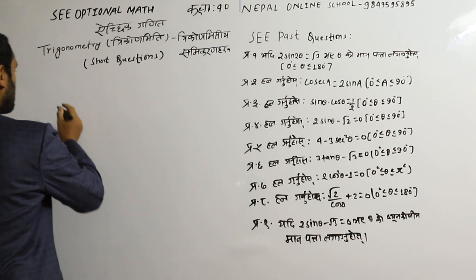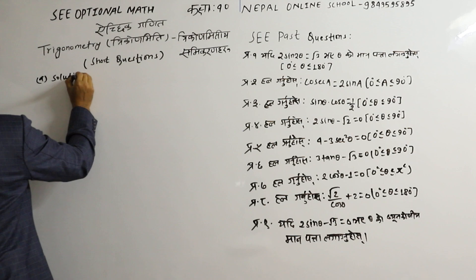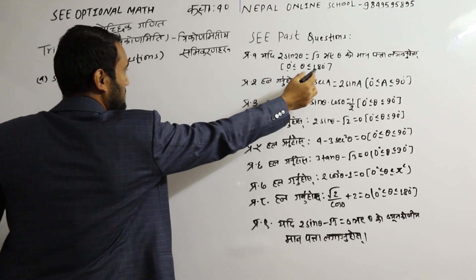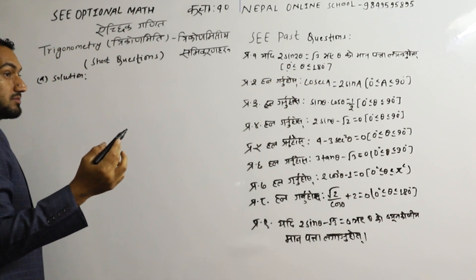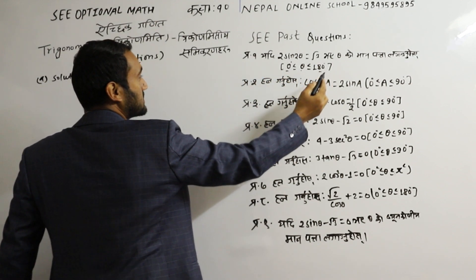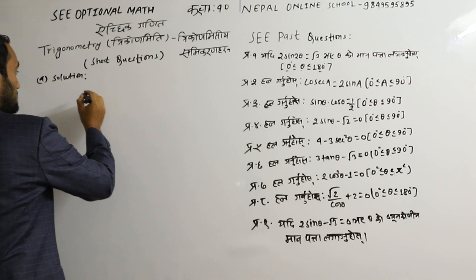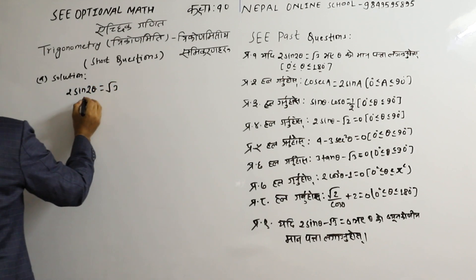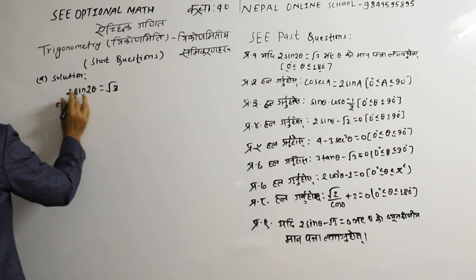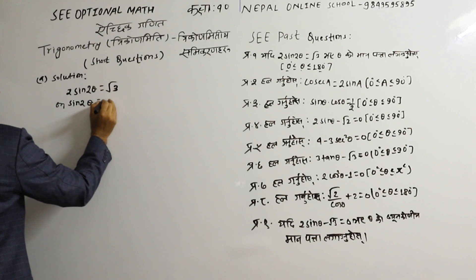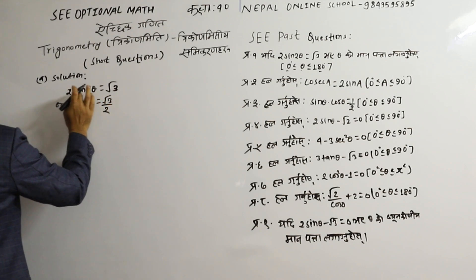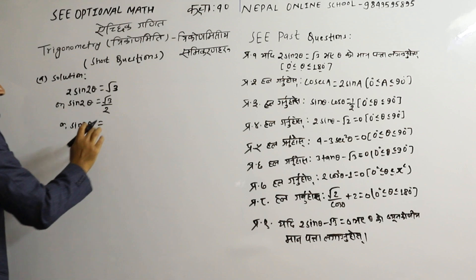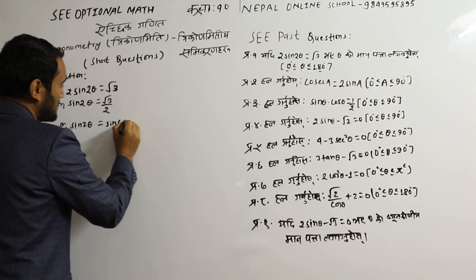First question: if 2sin2θ = √3 and θ is between 0° and 180°, how much do we have to find? 2sin2θ = √3. So 2θ is equal to √3 divided by 2. Now we write sin2θ = √3/2.